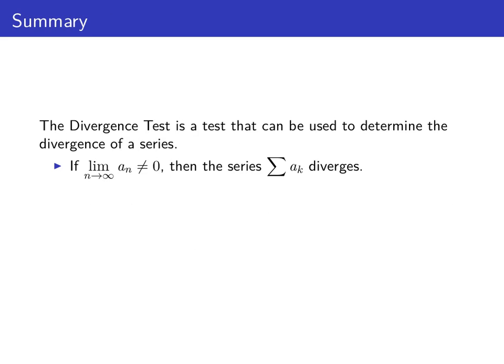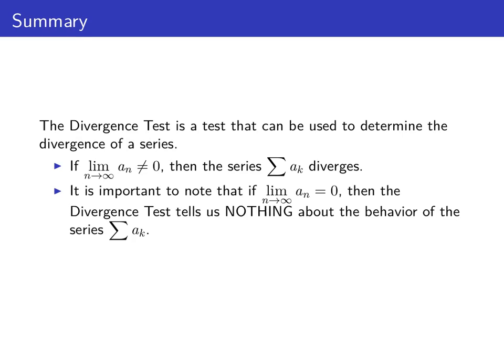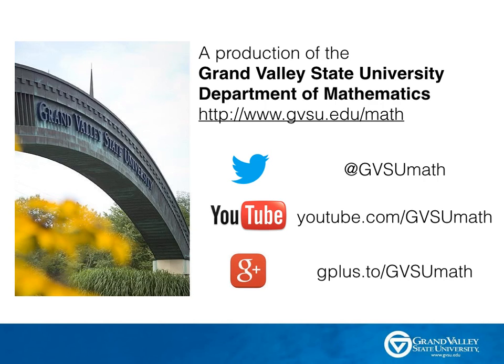To summarize, the divergence test can be used to tell us if a series diverges. If the limit of the sequence of n-th terms isn't 0, then the corresponding series has to diverge. However, if the limit of the sequence of n-th terms is 0, then the divergence test doesn't apply and tells us nothing about the series a sub k. That concludes our screencast on the divergence test. We hope you'll come back and visit again soon.